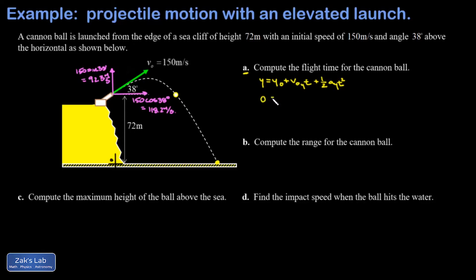My initial y velocity was about 92.3 meters per second. Again, I'm going to sub in ay = -9.8. Half of that is 4.9, so I get -4.9t².